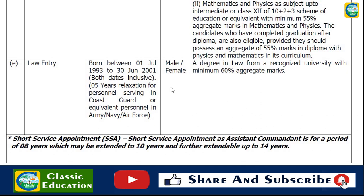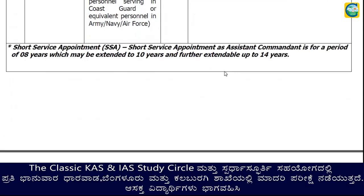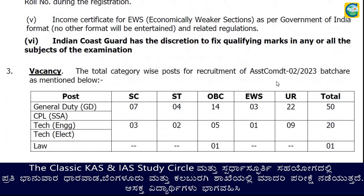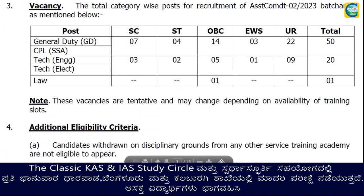Candidates with relevant qualifications and a minimum of 5 years of business or work experience are also eligible. In General Duty, the agency requires 3 years of experience. The total minimum vacancies across GD, CPL, and Technical branches is 71 vacancies.